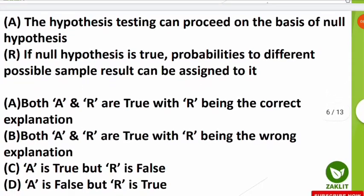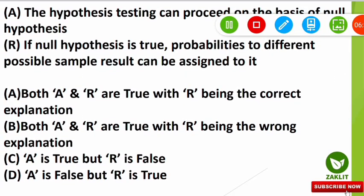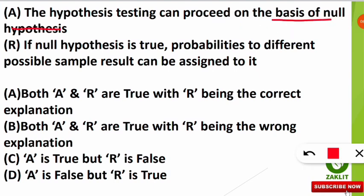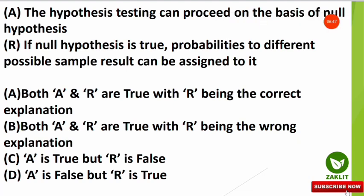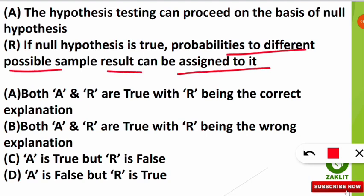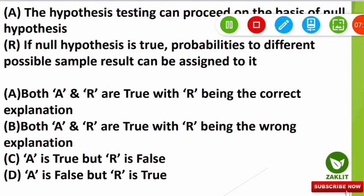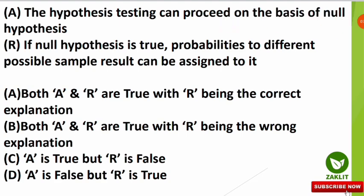The next question is an assertion and reasoning type. The assertion states: 'Hypothesis testing can proceed on the basis of null hypothesis.' The reason states: 'If the null hypothesis is true, then probabilities to different possible sample results can be assigned to it.' The correct option is A — both assertion and reasoning are correct, and the reason is the correct explanation of the assertion.